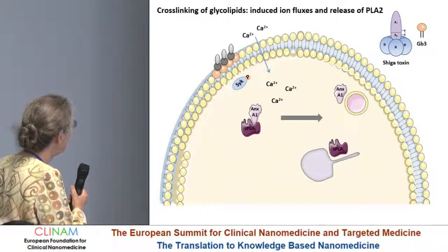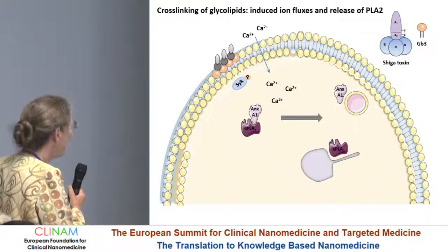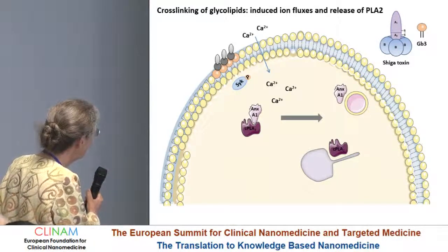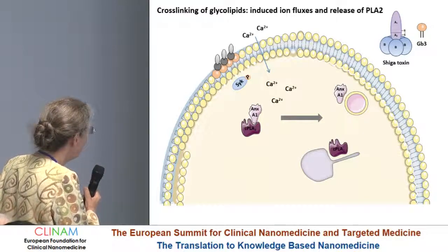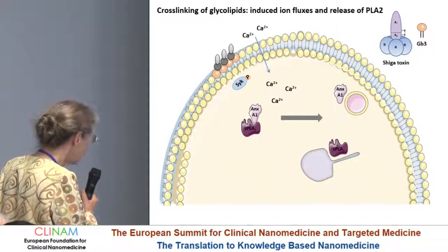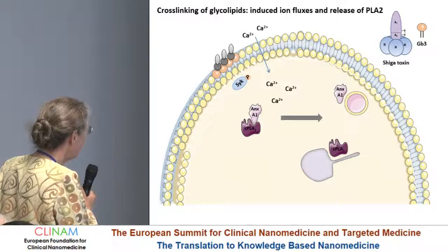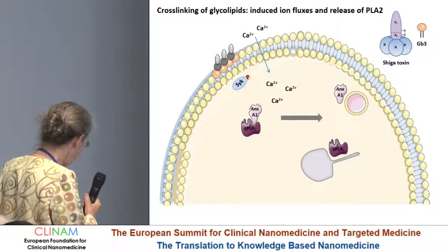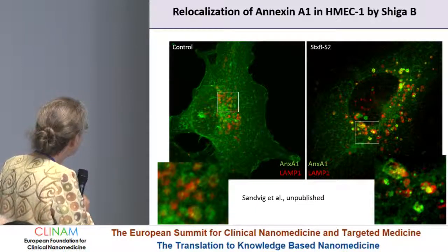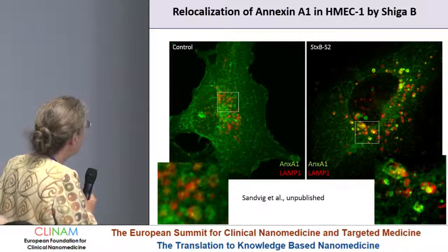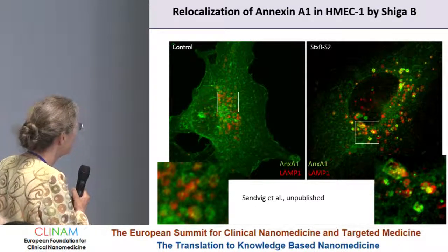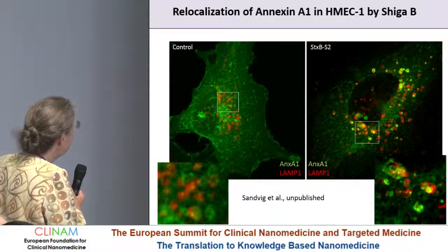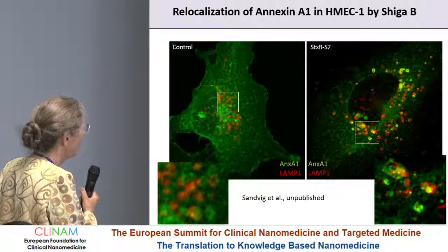When you cross-link glycolipids at the cell surface, many things may happen. This is a cross-linking of GB3 either by Shiga toxin or by adding antibodies to GB3. It turns out that there is a calcium flux through the membrane and activation and phosphorylation of the tyrosine kinase Src. Then there is dissociation of a complex consisting of annexin A1 and phospholipase A2. When phospholipase A2 becomes free, it acts on the membrane and can cause tubulation and changes in intracellular transport. This shows relocalization of annexin A1 in cells where you cross-link GB3 at the cell surface by adding Shiga B. In a control cell, you see annexin A1 in green and the lysosomal marker in red, and you can clearly see changes caused by cross-linking and signaling from the cell surface.